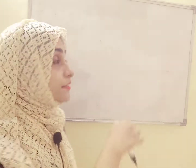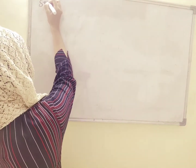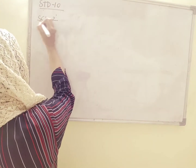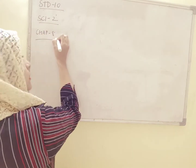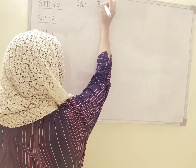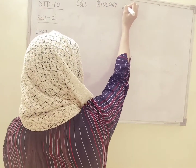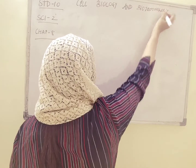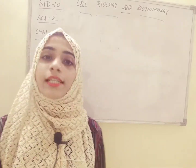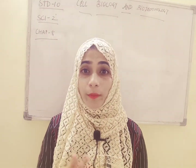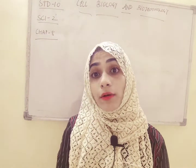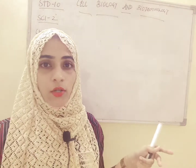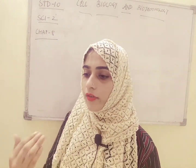Hello students, today we are going to continue with chapter number 8 of standard 10 science 2, which is cell biology and biotechnology. Till now in this chapter we have studied about cell biology, what cytology means, stem cells, the importance of organ transplantation and organ donation. Then we started with biotechnology — a technology which deals with living organisms — and we understood its applications, importance, and advantages.